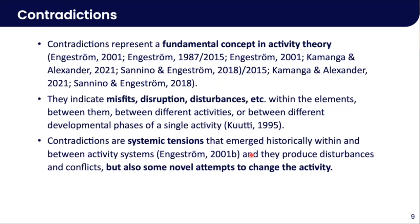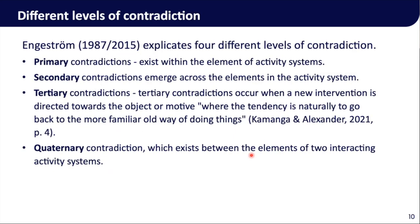Contradictions are systemic tensions which emerge either within or between activity systems, and they produce disturbances and conflicts. Sometimes they also lead to novel attempts to change the activity. Engeström delineates four different levels of contradictions: primary contradictions within the element of an activity system — for example, within object; secondary contradictions that emerge across elements in the activity system — for example, object and mediating tool; tertiary contradictions that occur when a new intervention is directed towards the object or motive, even if there is a tendency to go back to the old way of doing things; and quaternary contradictions between the elements of two interacting activity systems.